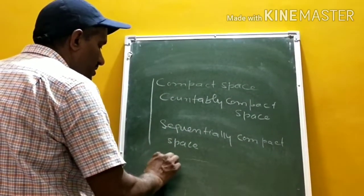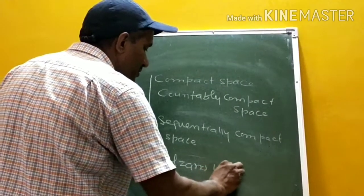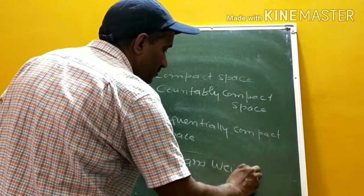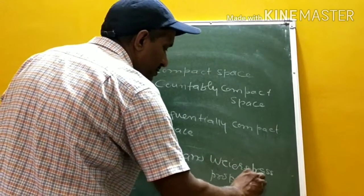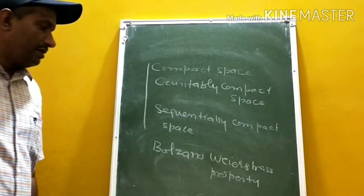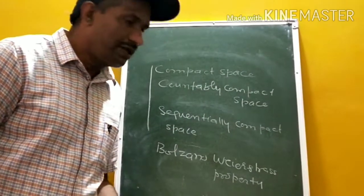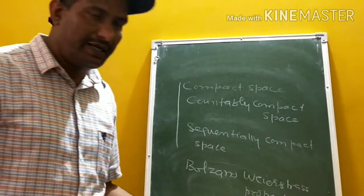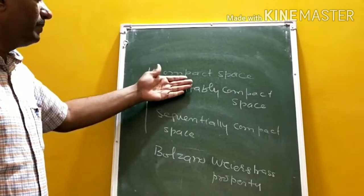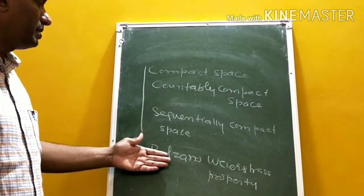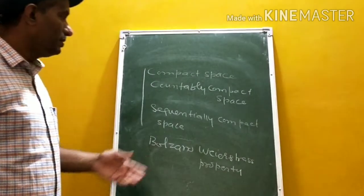Now, what do we mean by Bolzano's property? A topological space is said to have Bolzano's property if every infinite subset of X has a limit point. We will now show: compactness implies Bolzano's property, countably compact implies Bolzano's property, and sequentially compact implies Bolzano's property. We will do them one by one.